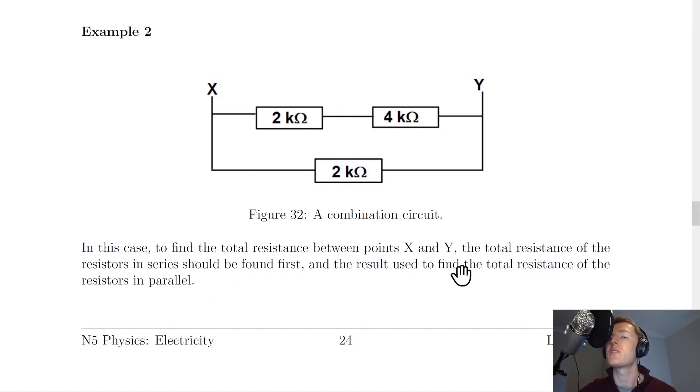So we would add these two together in series using our relationship for resistors in series, and then we would use the answer to that in parallel with this 2000 ohm resistor to find the total resistance between X and Y.